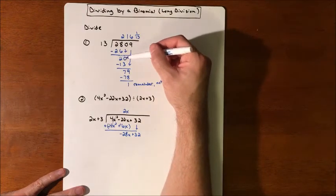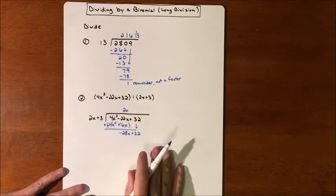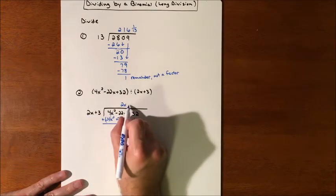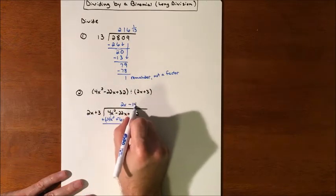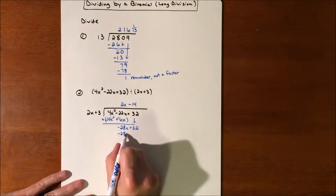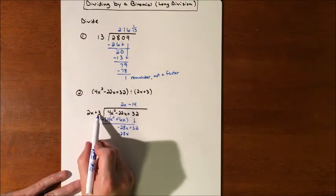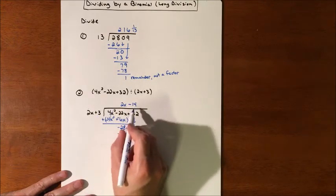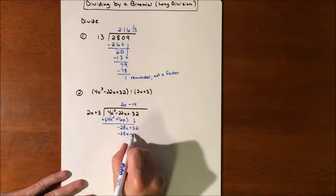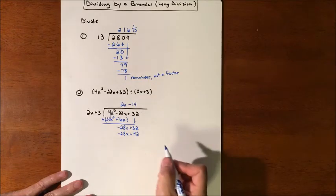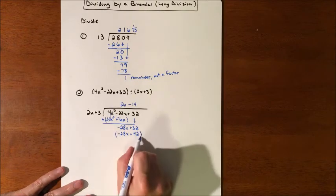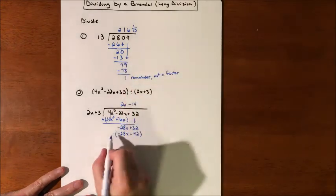Just like here, we subtracted and brought down. So now we're trying to make 2x become negative 28x, and that's going to be times a negative 14. So negative 14 times 2 is negative 28x. Negative 14 times 3 is a negative 42. And then we're going to subtract this entire piece, just like we do on every single one of these.